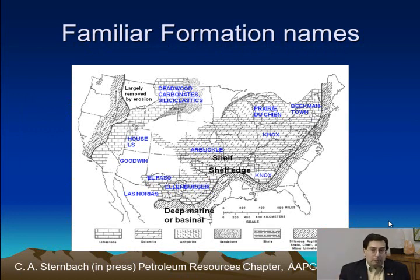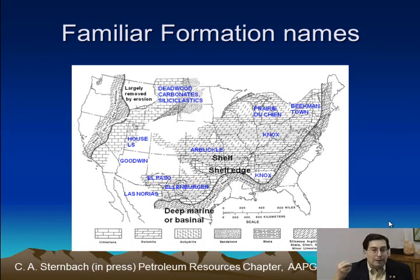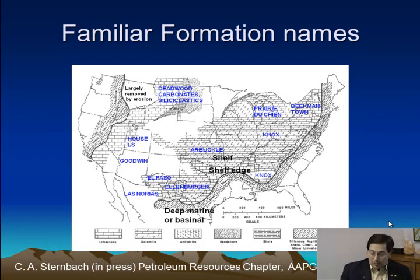This shows the middle portion of the carbonate bank — with the dolomite pattern and the limestone pattern — where the majority of production occurs. The explorer today will recognize the reservoir names: the Ellenberger, the Arbuckle, the Knox, the Prairie du Chien, and the Beekmantown. So when we say Great American Carbonate Bank, we are referring to all of these very common oil and gas reservoir names.